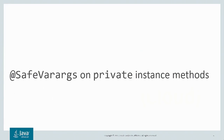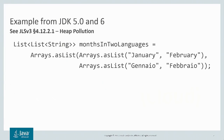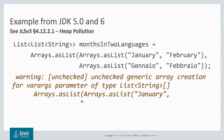First, SafeVarargs on private instance methods. You could write code like this for some time, even back in JDK 5 or 6, using the utility method Arrays.asList in the platform to more easily create, in this case, a list of list of strings. However, when you compile this code, if you were diligent about your warning messages, you'd note a warning: "Warning: unchecked generic array creation for VARARGS parameter."